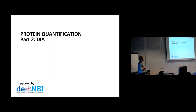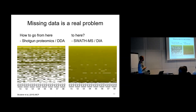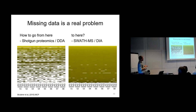The problem with DDA is that you typically don't measure the same proteins in every sample, so if you want to compare fold changes but you didn't measure a protein in a given sample, you have a problem. SWATH DIA offers a way to be more reproducible across samples and fill this matrix to a much larger extent, which is totally necessary for comprehensive studies.